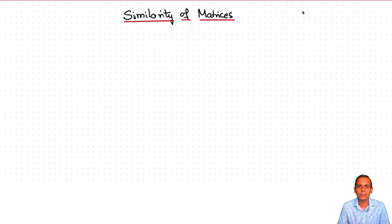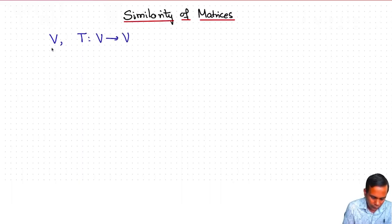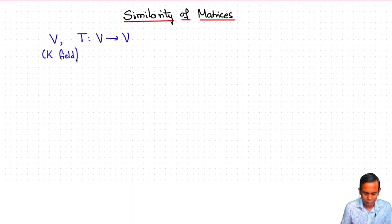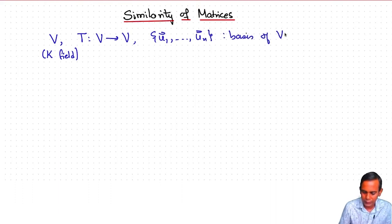In this lecture, I'm going to tell you about similarity of matrices. To understand this, let's start with a vector space V and a linear map from V to V. We'll assume that V is a vector space over the field K — that's the underlying field. And let's also have a basis u1, u2, ..., un of V. So this V is an n-dimensional vector space over K.